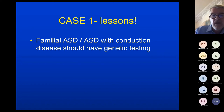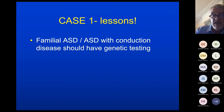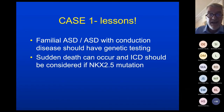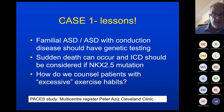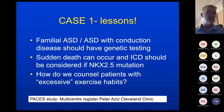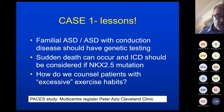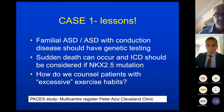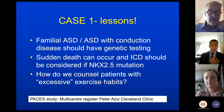Therein lies the problem with somebody who's asymptomatic but has this potential condition. I don't know his genetics yet — he's three times failed to turn up for genetic testing and we're chasing him up. The lessons from this case: if you've got this combination of conduction disease — first degree heart block with ASD, particularly with a family history — you should be doing genetic testing. Sudden death can occur in this group, and you should be considering an ICD if there's an NKX 2.5 mutation. We've got several families now where that's exactly what happened. How do we counsel patients with excessive exercise habits? It's very difficult because he is determined to keep going. And finally, the North American Paediatric Electrophysiology Group — PACES — have started a multi-centre register for NKX 2.5 patients, led by Peter Aziz at Cleveland Clinic.